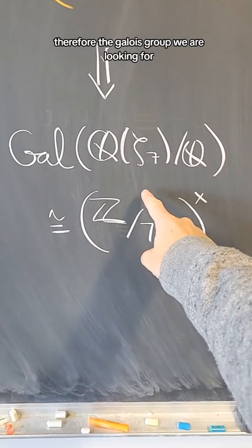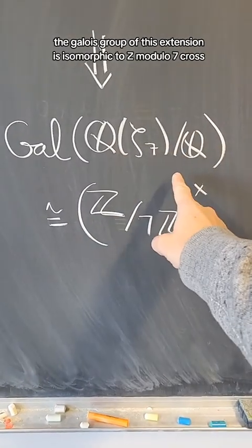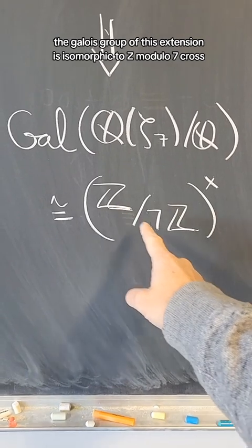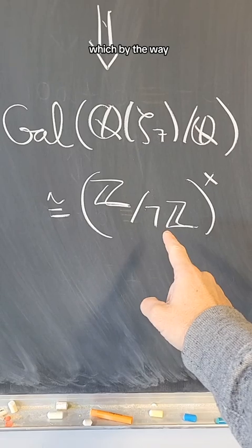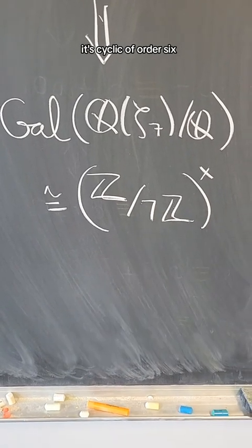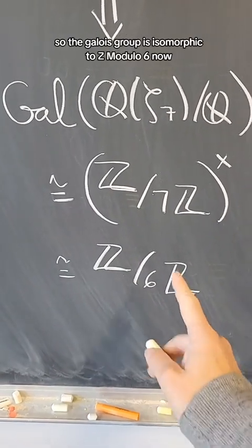Therefore, the Galois group we are looking for, the Galois group of this extension, is isomorphic to (Z/7Z)×, which by the way is cyclic of order 6. So the Galois group is isomorphic to Z/6Z.